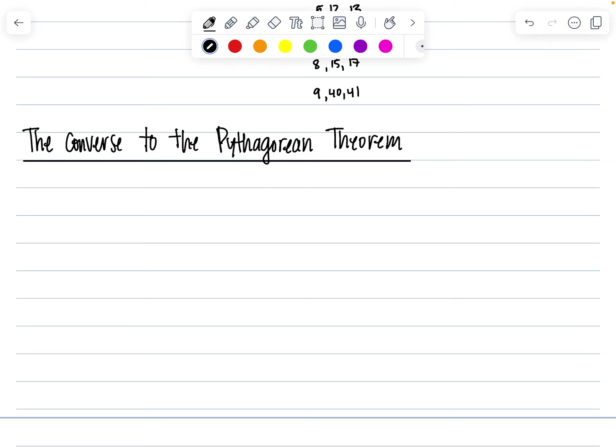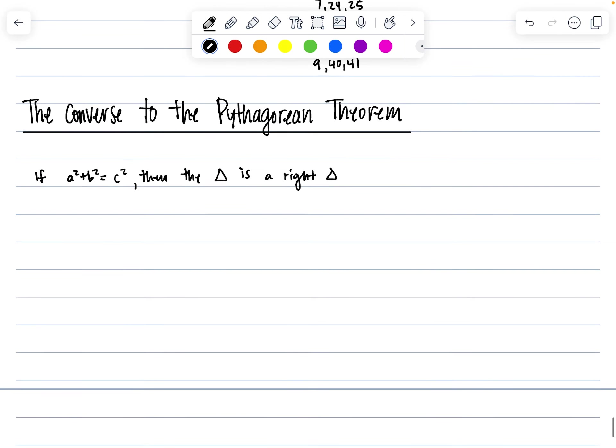So let's start out with the actual theorem. If a squared plus b squared is equal to c squared, then the triangle is a right triangle. And let's do a quick example of this on the side.